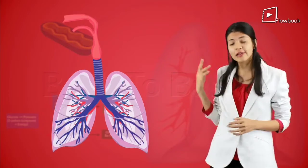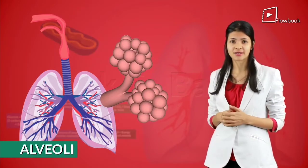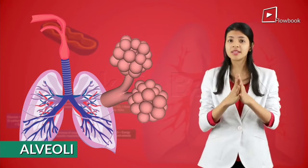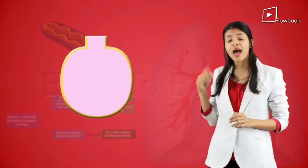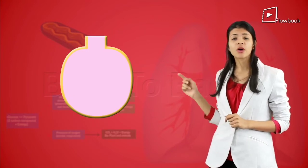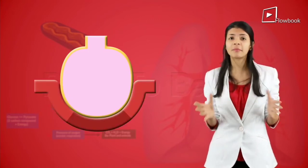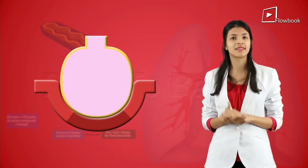The lungs have alveoli or the air sacs in them. These alveoli are almost one cell thick and surrounding these alveoli or the air sacs are blood capillaries which are also one cell thick.